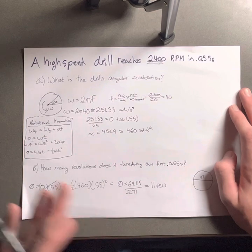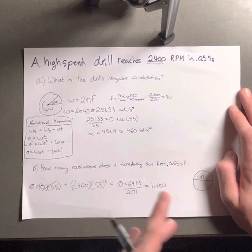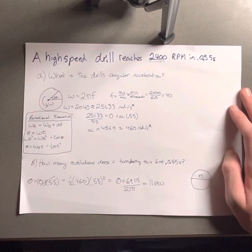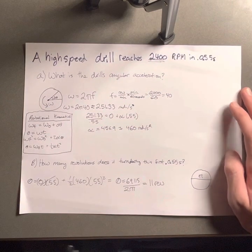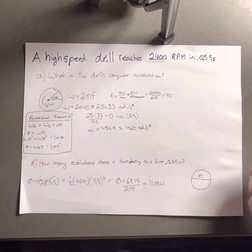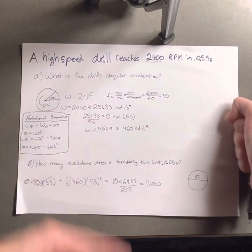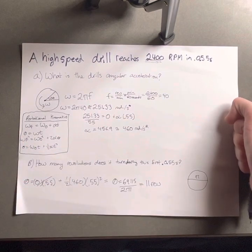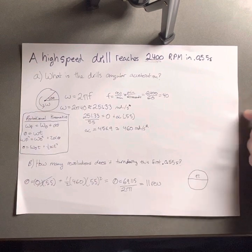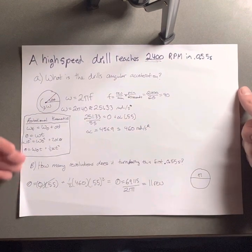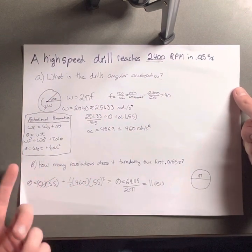And then part B: how many revolutions does it turn during the first 0.55 seconds? Again, we want to know how many times it went around in circles in that first 0.55 seconds, and we're going to do this by using our kinematics again.